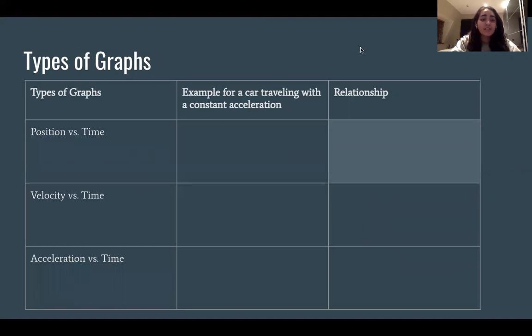And now we're going to be talking about how to display motion in terms of graphs. So we have three main types here: we have position versus time, velocity versus time, and acceleration versus time. And here we're going to think of a car traveling at a constant acceleration.